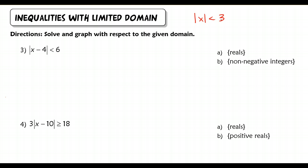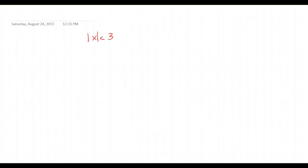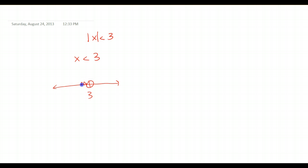You don't need to write all this down, but make sure you're listening to the explanation. Here I have the absolute value of x is less than 3. We know from absolute value equations we have two cases. Either x is less than 3 — if I graph that, I have all possible values less than 3, so that's all real numbers strictly less than 3.